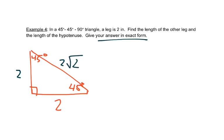It tells us to give our answer in exact form, so we just want to leave it like that. So the other leg is 2 inches and the hypotenuse is 2 square root of 2 inches.